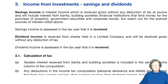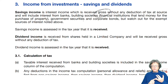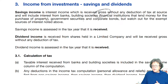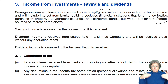Savings income is interest income, received gross — always gross — without any deduction of tax at source. It will come from either a bank or a building society. A building society is a financial institution that lends money for the purchase of properties. You might also find government securities and corporate bonds, but be careful. Those exempt incomes we mentioned earlier — make sure you include them and say that they are exempt, or put them at the bottom and note they are exempt.